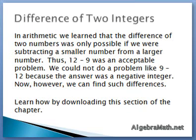The difference of two integers: In arithmetic, we learned that the difference of two numbers was only possible if we were subtracting a smaller number from a larger number. Thus, twelve minus nine was an acceptable problem. We could not do a problem like nine minus twelve because the answer was a negative number. Now, however, we can find such differences. Learn by downloading this section of the chapter.